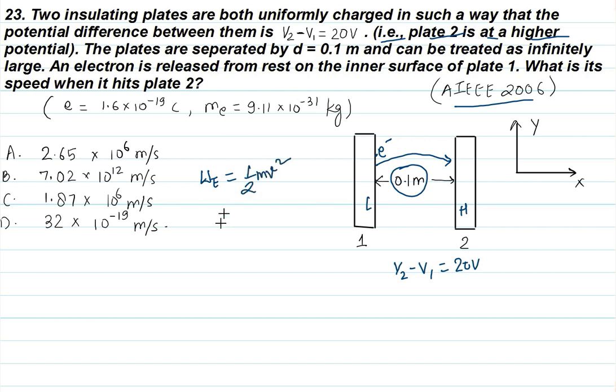The electric field work is Q into V. In this case, I can write eV where V means potential difference, that is 20. This equals half M into V squared. Now here we have a little calculation.